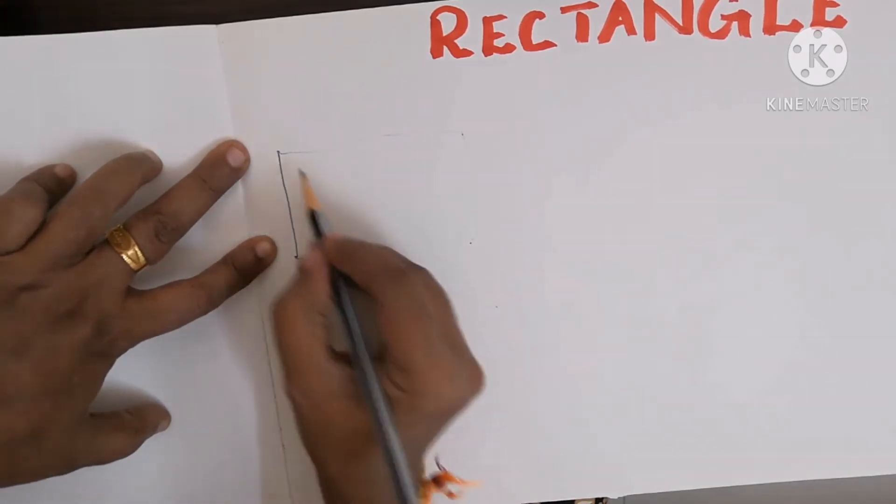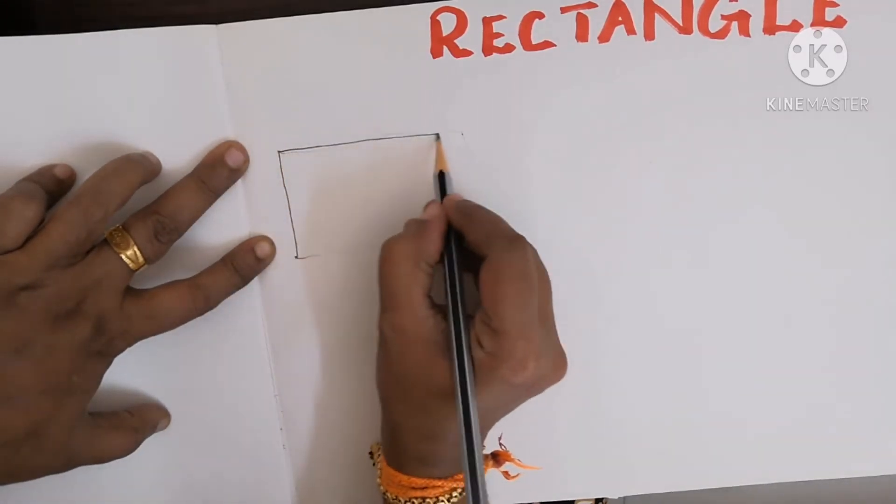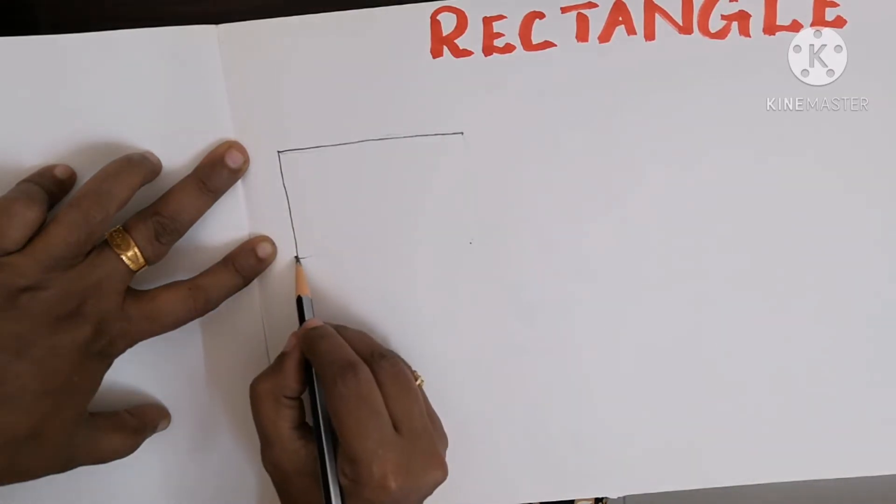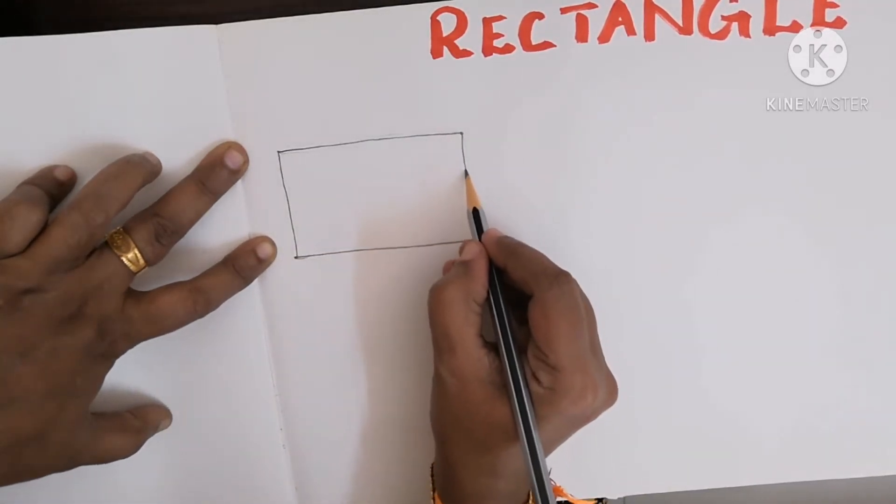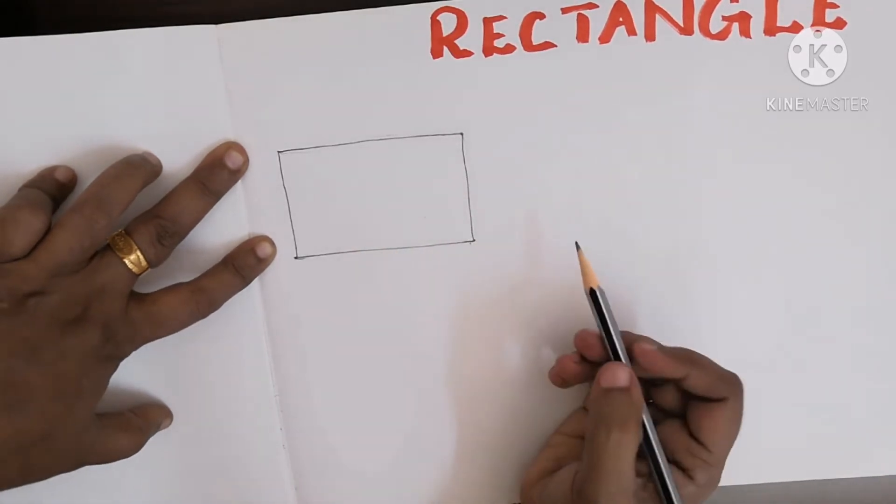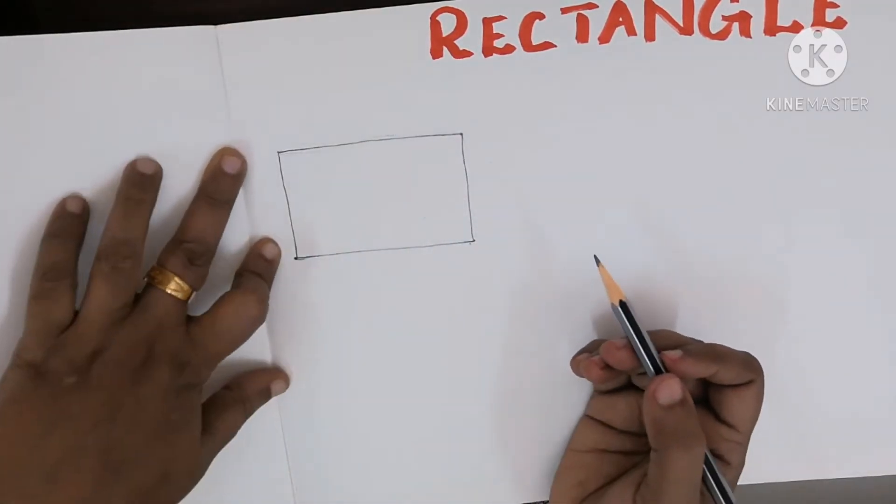Standing line, sleeping line, sleeping line, again standing line. What is this? Rectangle. Now we will do the activity.